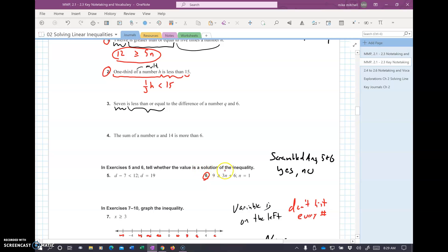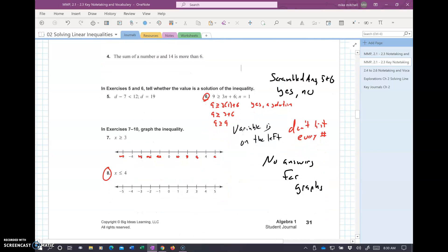Tell whether the value is a solution of the inequality. This is just plug it in and test it. N equals one. So, I have nine greater than or equal to three times one plus six. Nine greater than or equal to three plus six. Nine greater than or equal to nine. This is yes, it is a solution. If I would have had nine greater than nine, it would have been no solution because nine is not greater than nine. So, you've got to pay attention to those equals when you get those in there.